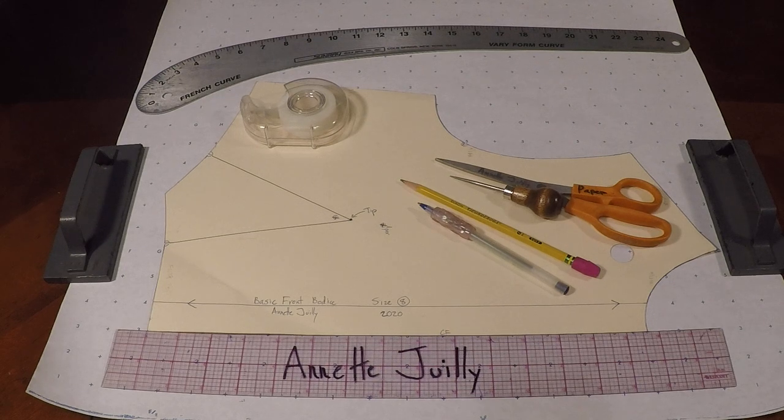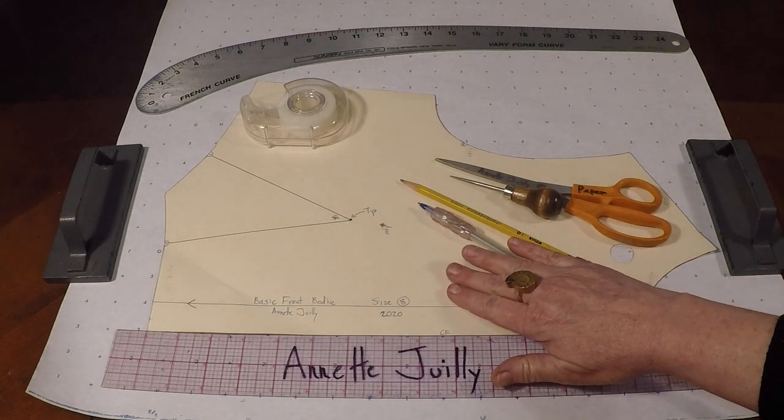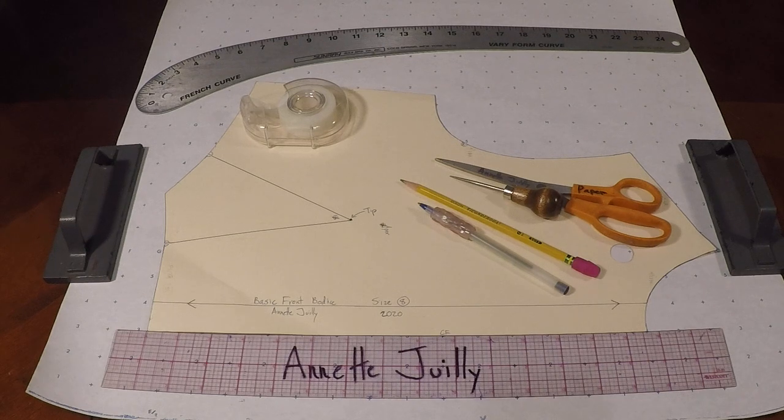Today we're going to be working on dart manipulation using the pivot method. We'll be working with our front full scale basic one dart bodice block.